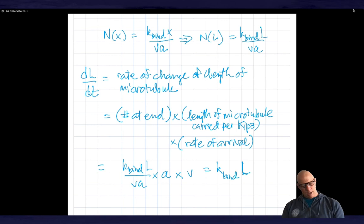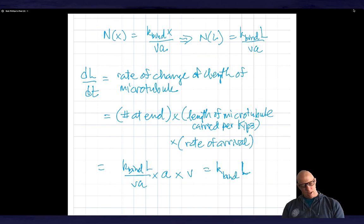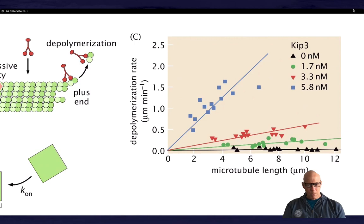And so this gives us this very simple relationship, which is that the rate at which monomers are removed is proportional to the length. So that's what I showed you in this data. So basically we've actually, in this data, we have both of these effects because we just calculated that dL by dt is equal to k_bind times L.